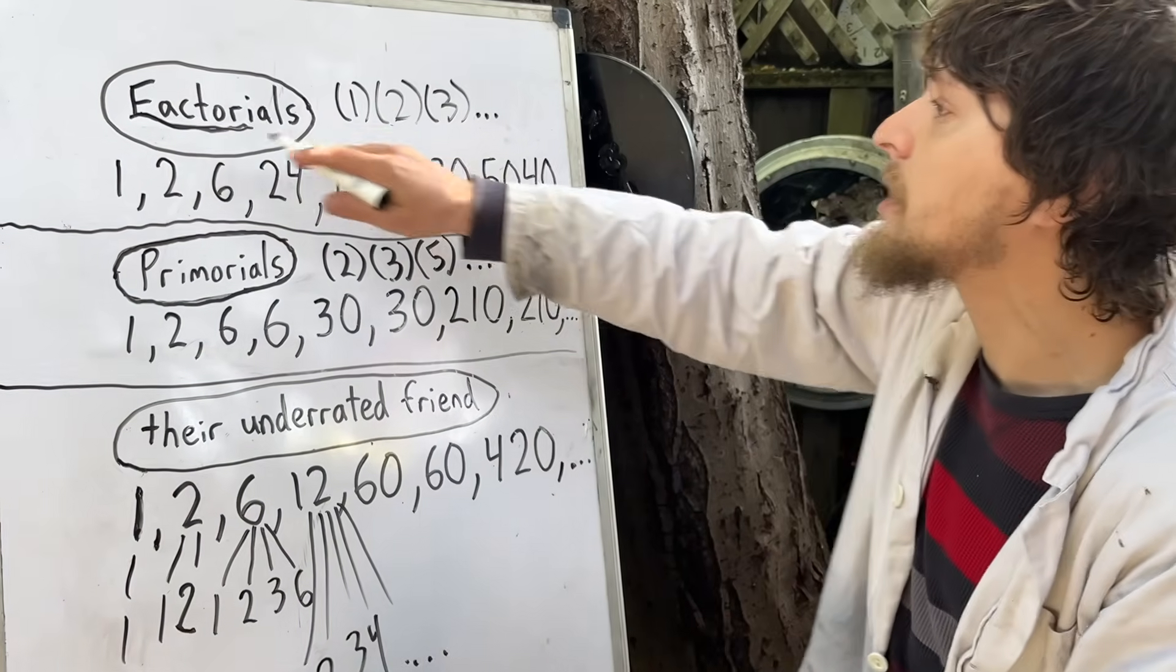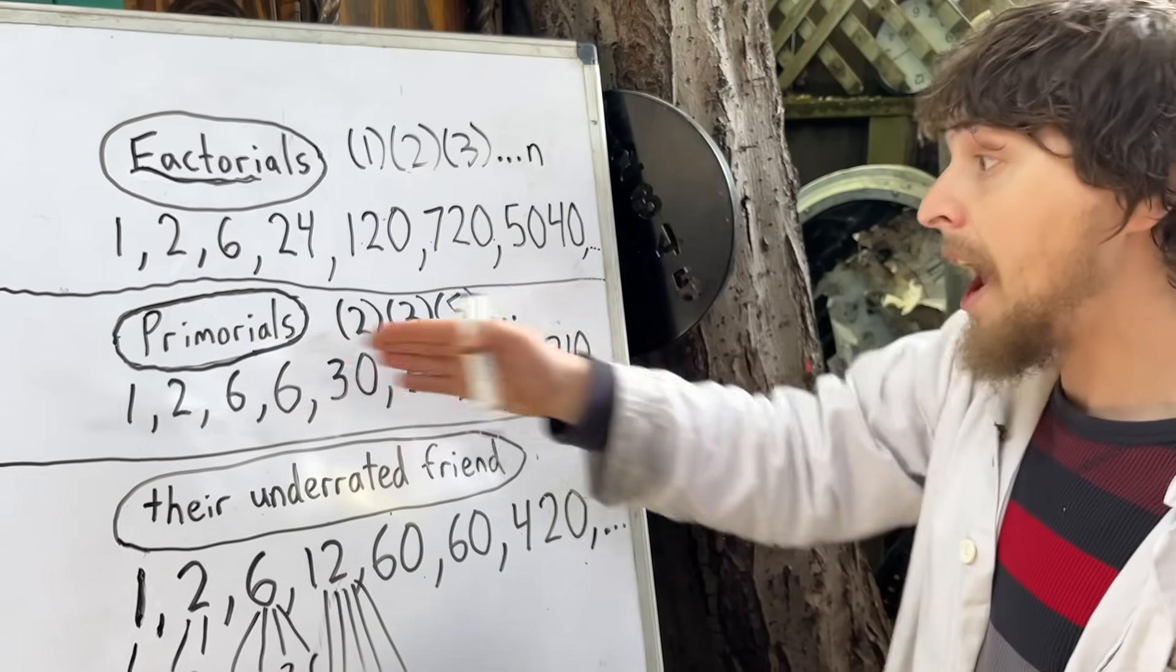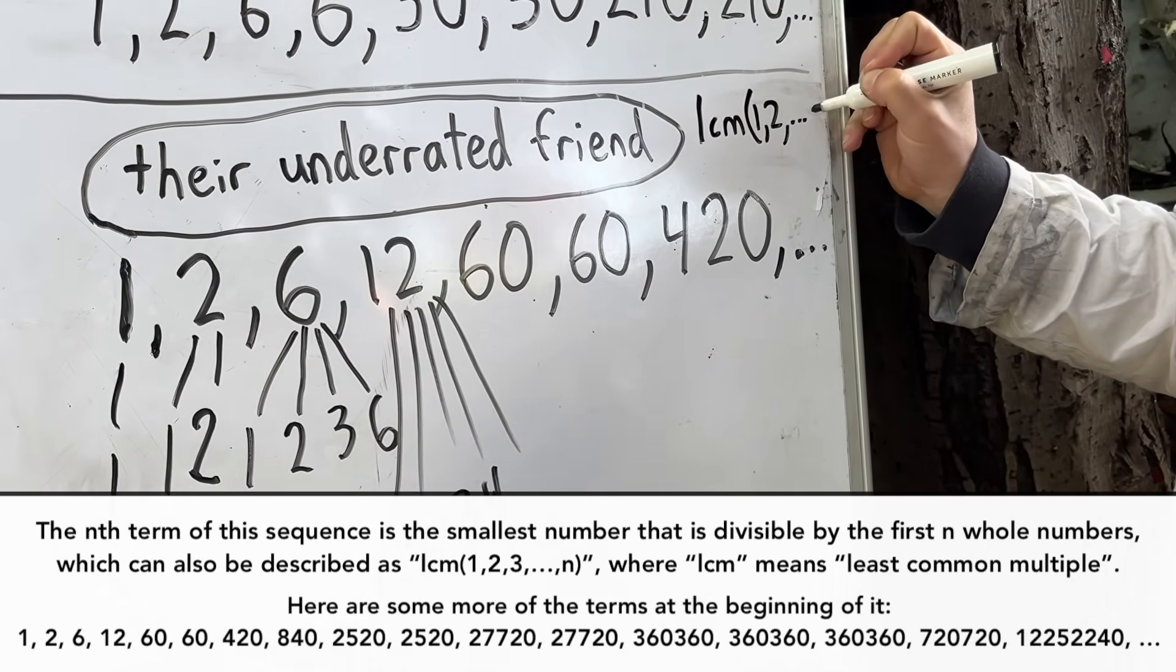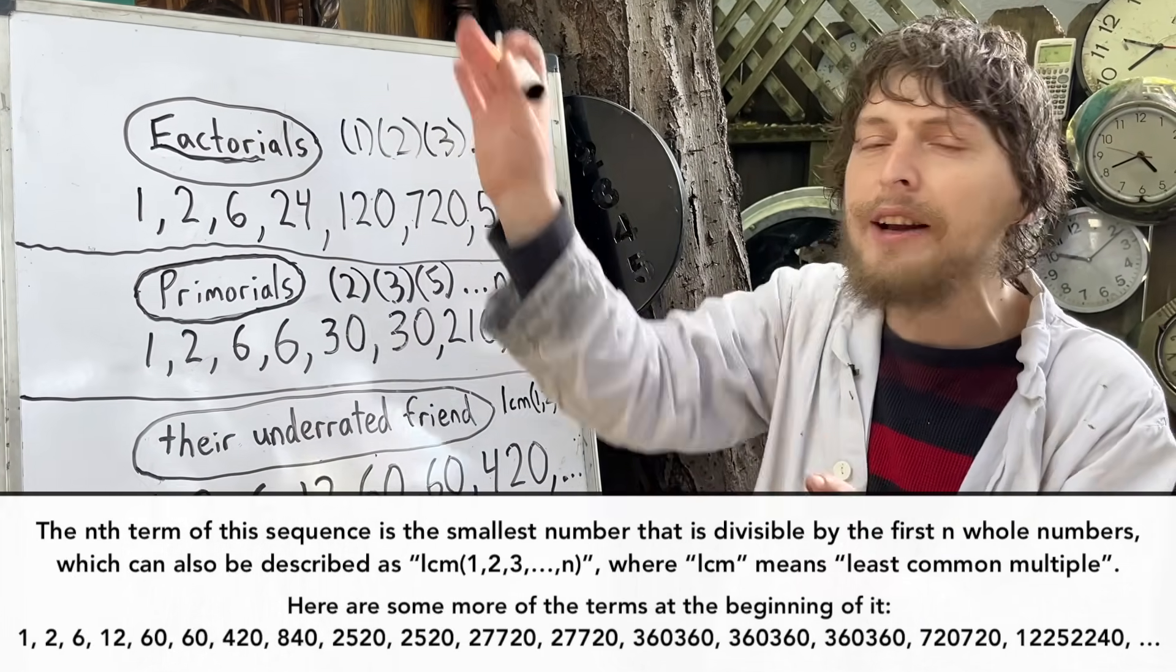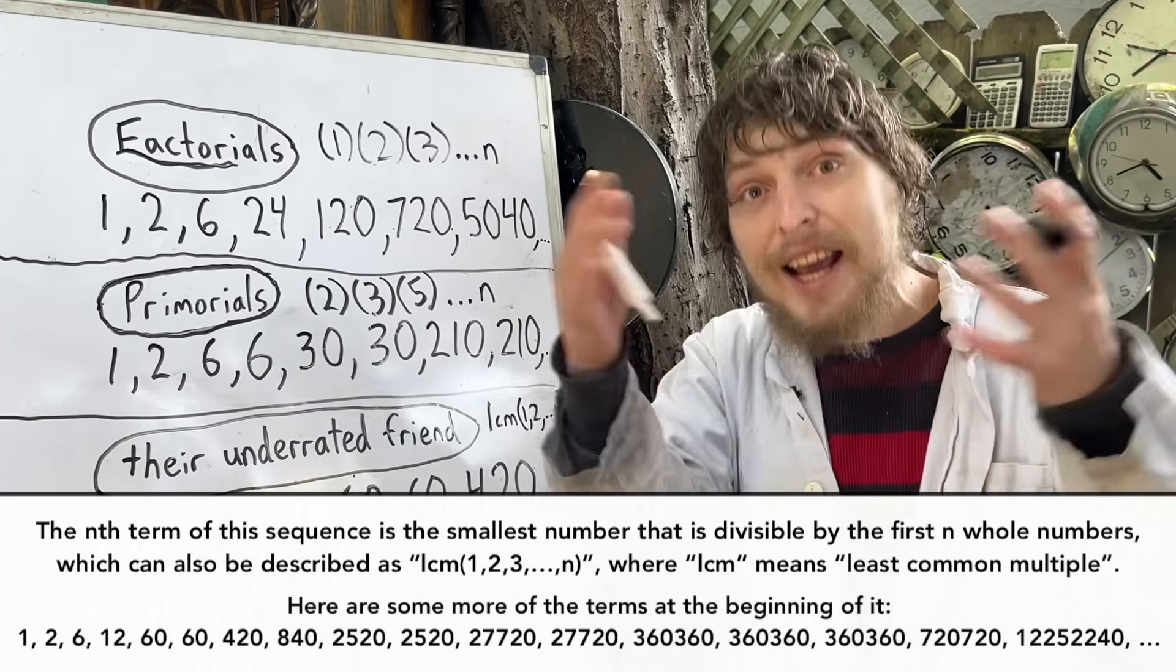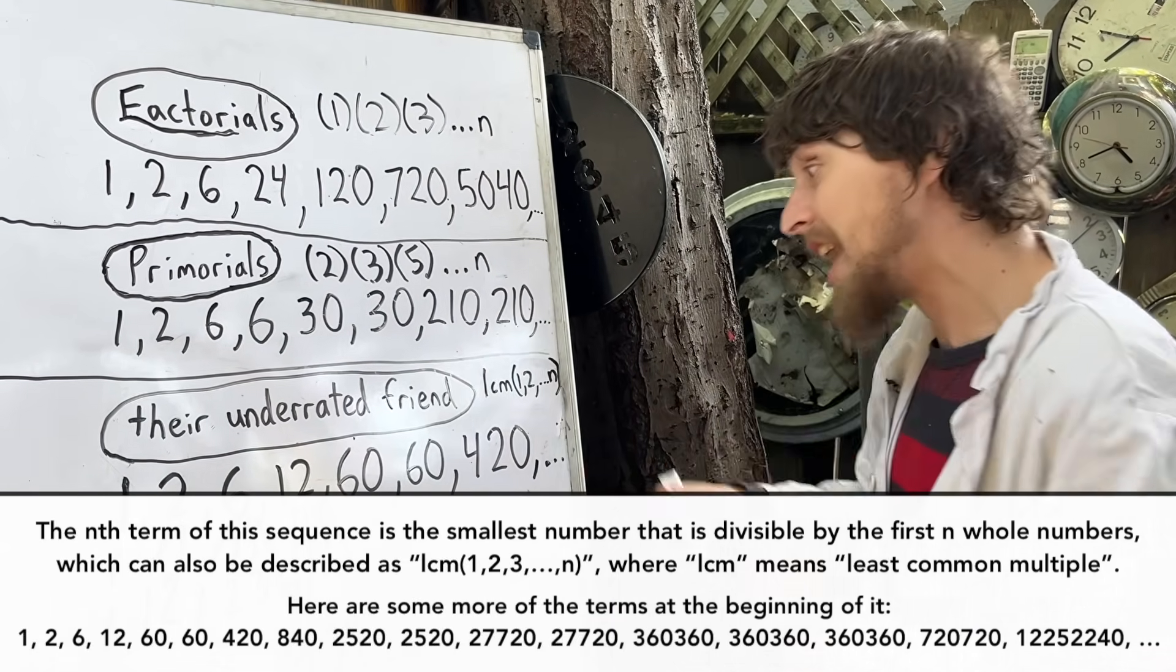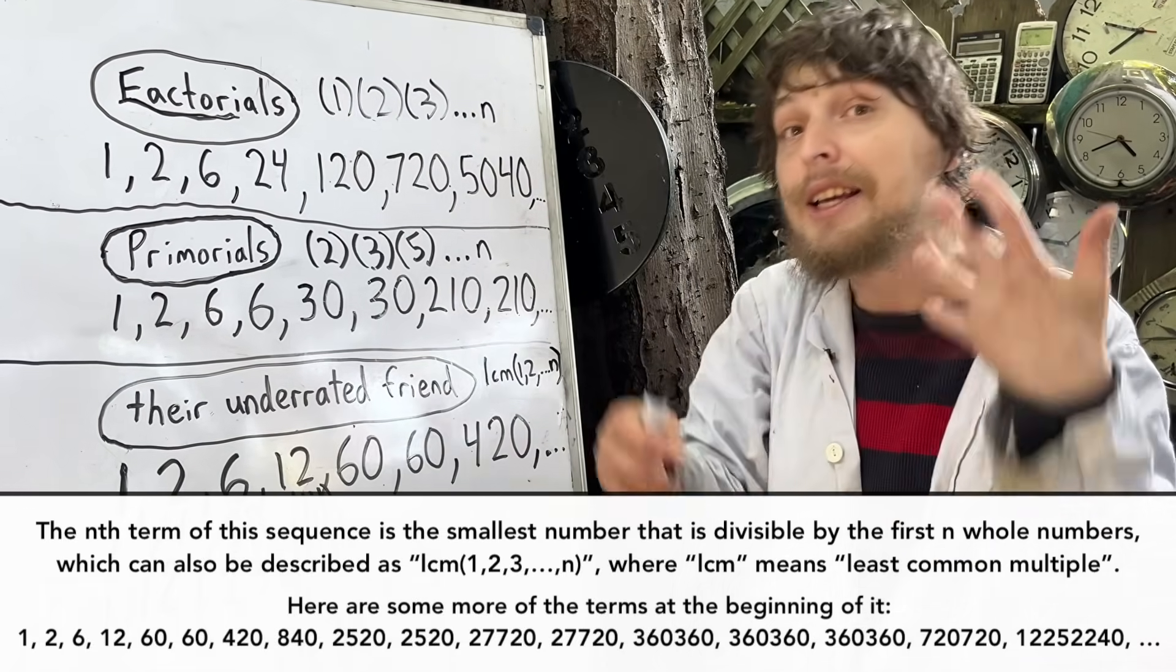Some of these do also show up on other classic lists, but not all of them I had ever realized were part of such a special divisibility club. Currently, the best way to describe this sequence is similar to how factorials are multiplying all of the whole numbers up to some point n, and primorials multiply all the primes up to some number n. This one is the least common multiple of all of the whole numbers up to some point n. As a quick reminder, the least common multiple of a set of numbers is sort of a friend of the trait of the greatest common denominator of some set of numbers.